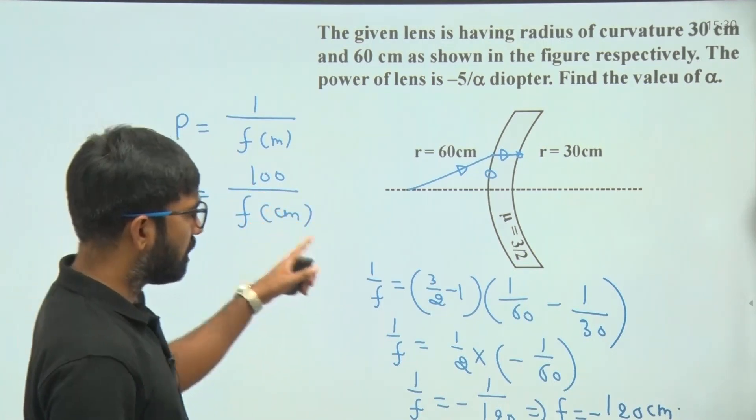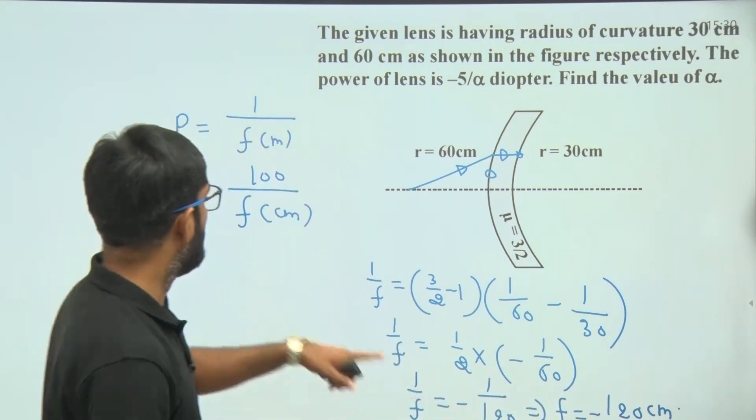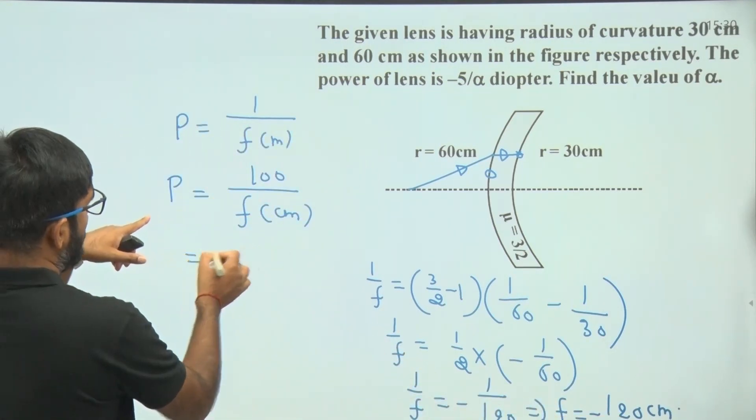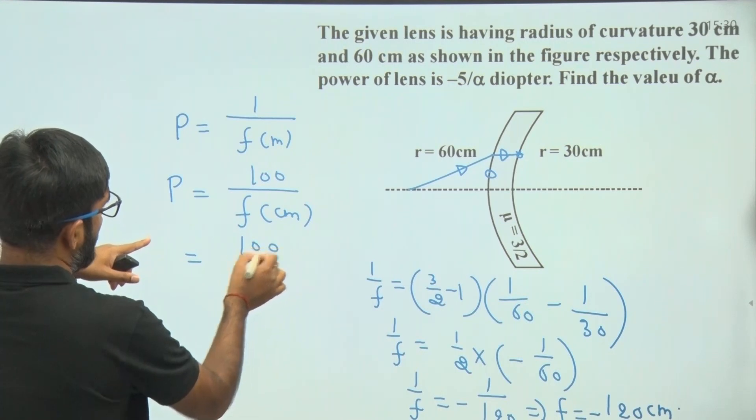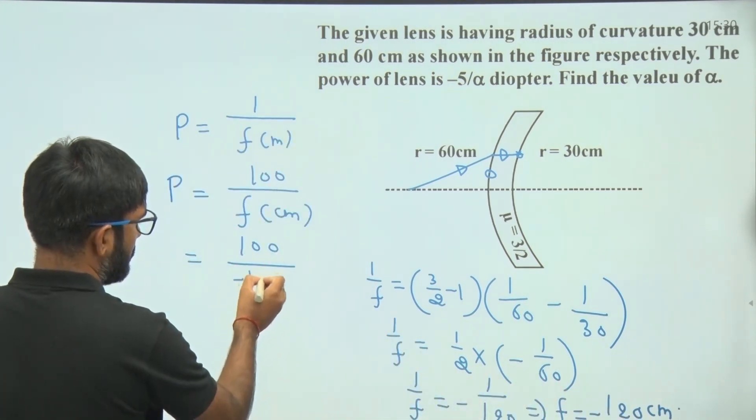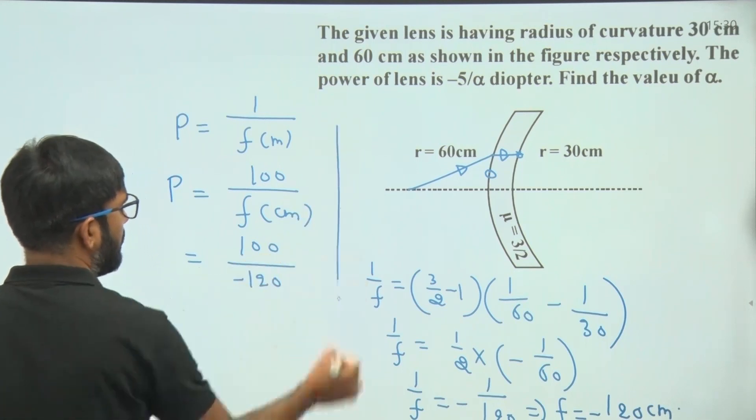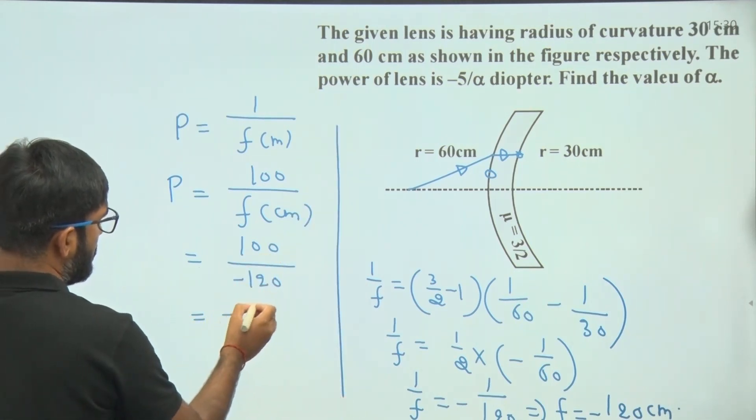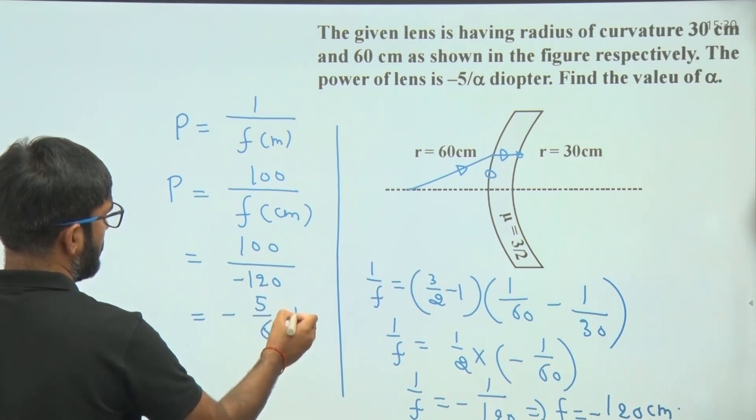In our calculation, focal length is in centimeters, so we will use this formula. Power is equal to 100 upon f in centimeters, which is minus 120. This is minus 120 centimeters. Then this value is given by minus 5 by 6 diopter.